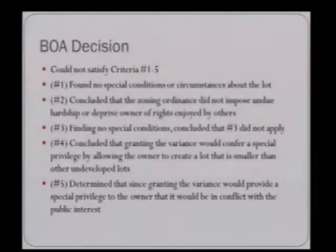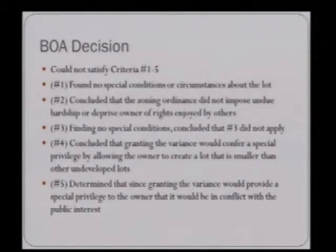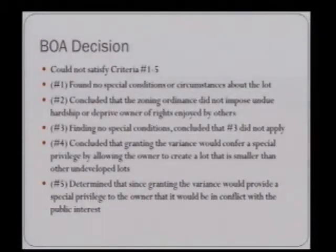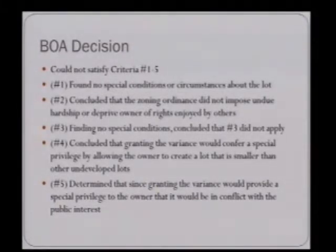The Board of Adjustment denied the decision based on their inability to satisfy criteria numbers 1 through 5. For number 1, they found that no special conditions or circumstances existed about the lot. For number 2, they concluded the zoning ordinance did not impose undue hardship or deprive the owner of rights enjoyed by others. For number 3, since no special conditions were found, they concluded number 3 did not apply. For number 4, they concluded that granting the variance would confer a special privilege by allowing the owner to create a lot smaller than other undeveloped lots. And for number 5, they determined that since granting the variance would provide a special privilege, it would be in conflict with the public interest.